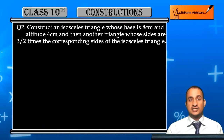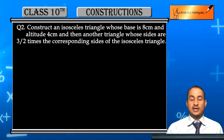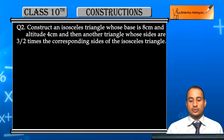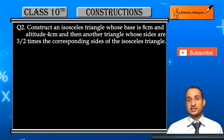Or, draw an isosceles triangle with base 8 centimeters and altitude 4 centimeters, and then draw a triangle with 1 and a half times the corresponding sides of the isosceles triangle. The base ratio is 3/2, so this is a Type 2 construction question where the numerator is greater than the denominator.